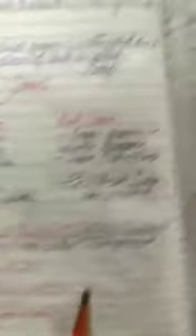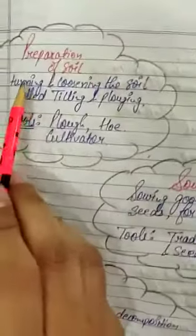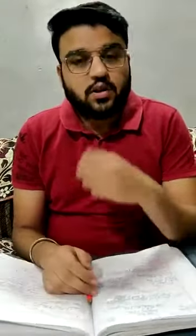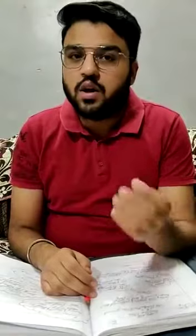The first one is preparation of soil. Preparation of soil means turning and loosening of the soil. The process of turning and loosening of the soil is called plowing or tilling. What are the benefits of plowing? It mixes the soil and breaks up the large pieces of soil.